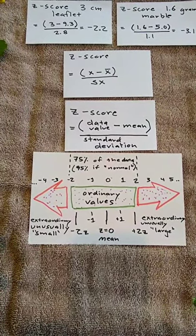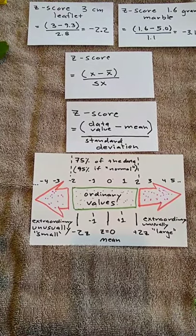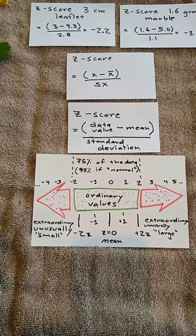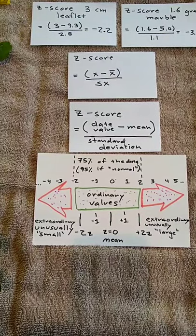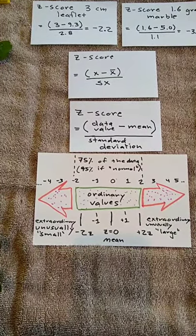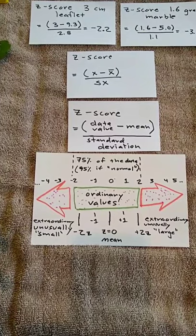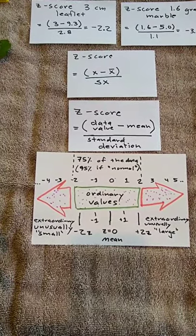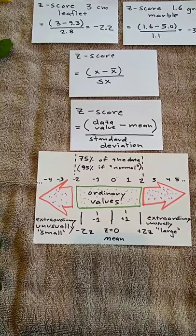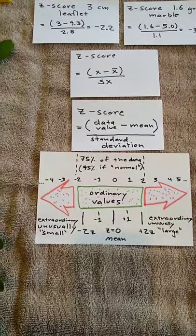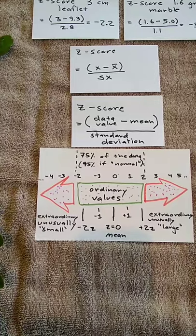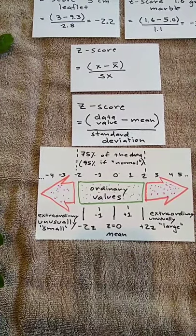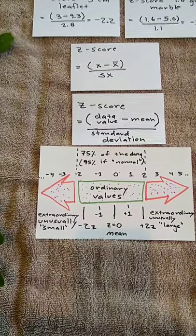So z-scores between negative 2 and 2 are considered ordinary values. And beyond, either more negative than negative 2, such as negative 3, negative 4, or above positive 2, such as 3, 4, 5 standard deviations above the mean, these are unusually large values. So we can speak of values as being unusually small or unusually large, relative to the mean and standard deviation using the z-score.